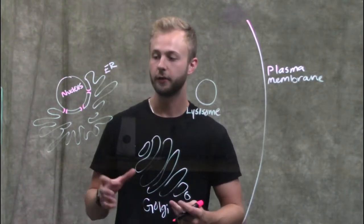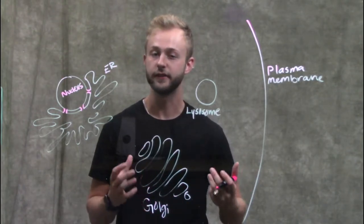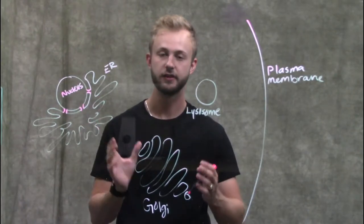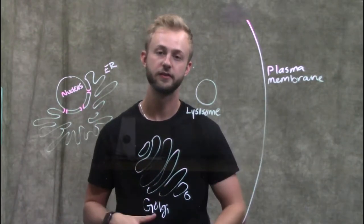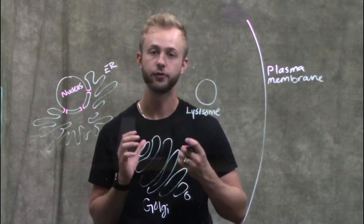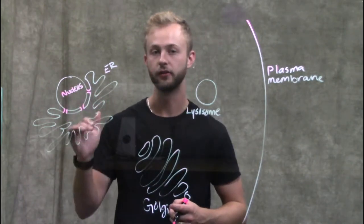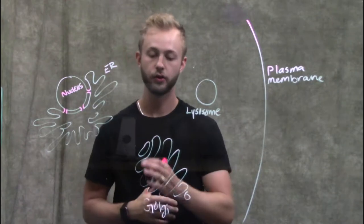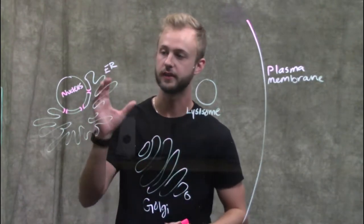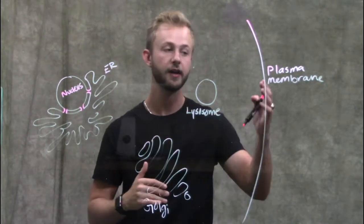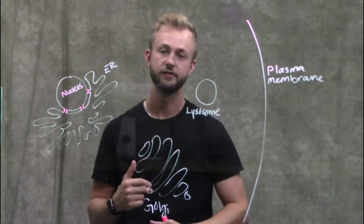What allows the endomembrane system to be able to do this efficiently is that the membranes of the different components are connected to one another, either through a physical continuity, as is the case with the nuclear envelope and the lumen of the endoplasmic reticulum, or through vesicles, which would be the case between the ER and the Golgi body and the plasma membrane and the lysosomes as well.